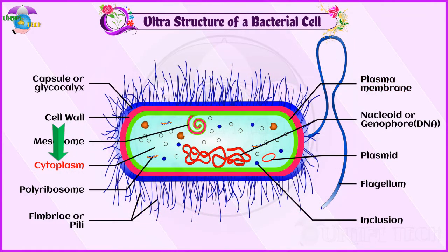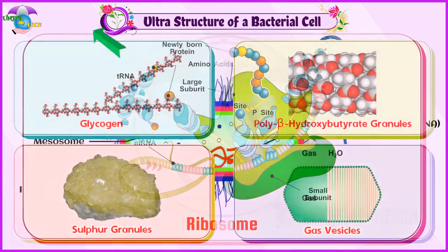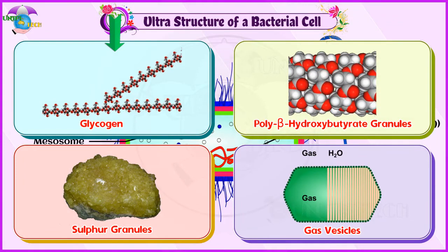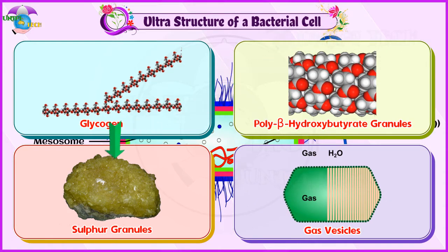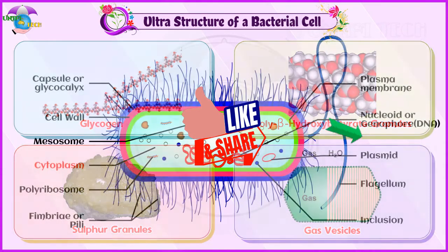Cytoplasm: The cytoplasm is thick and semi-transparent. It contains ribosomes and other cell inclusions. Cytoplasmic inclusions like glycogen, polyhydroxybutyrate granules, sulfur granules, and gas vesicles are present.